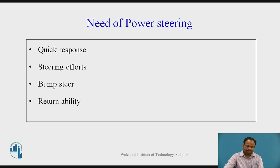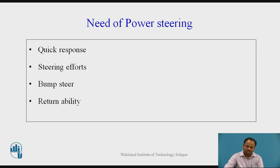The next reason is Bump Steer. As we know, bumps on the road are reduced by the suspension system, but since the steering system is directly attached to the wheel hub, some amount of bump force is also transferred to the steering system, which tends to steer the vehicle against the will of the driver, causing the vehicle to lose stability. Bump steer can be controlled mechanically by providing an optimum scrub radius — the angle between the center line of the wheel and the kingpin inclination of the knuckle — but power steering controls it in a more effective manner.